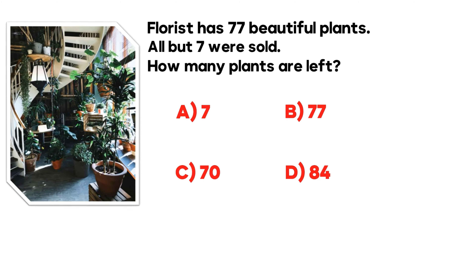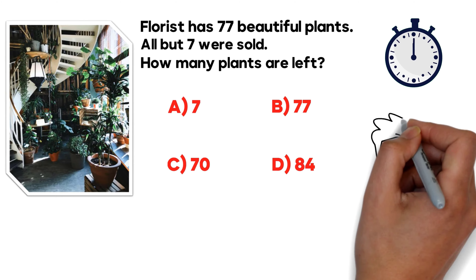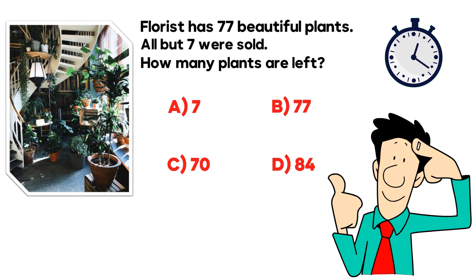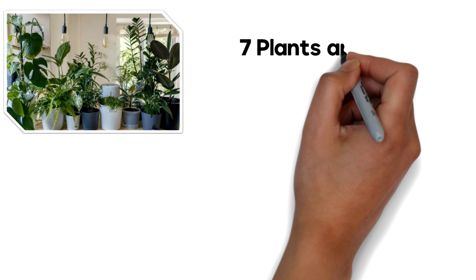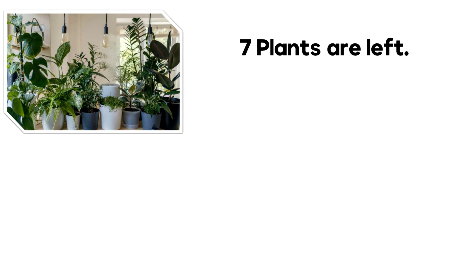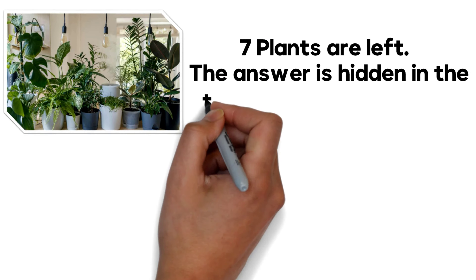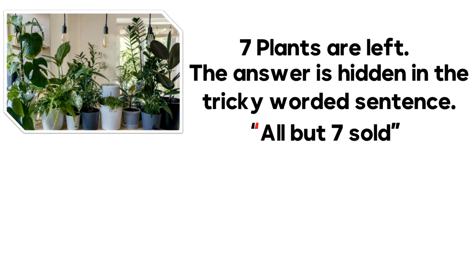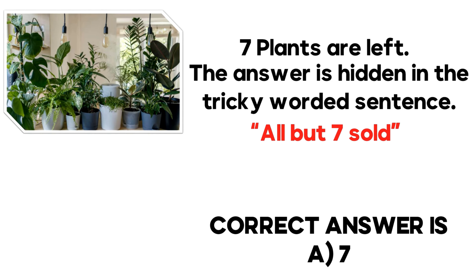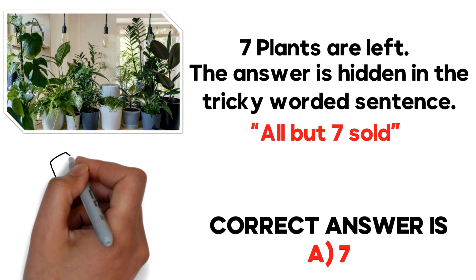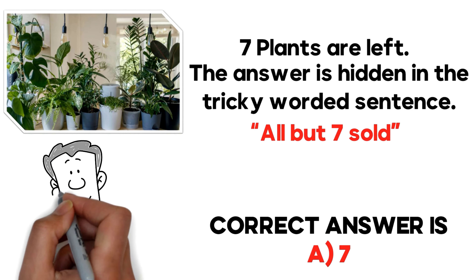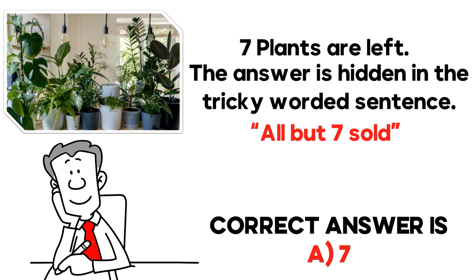Do you think you know the answer? Let's continue to see how we can get to the correct solution together. The answer is very simple: seven plants are left. The answer is hidden in the tricky wording — 'all but 7 sold.' So the correct answer here is choice A, 7. Hopefully you read this question correctly, understood it well, and solved it on your own.